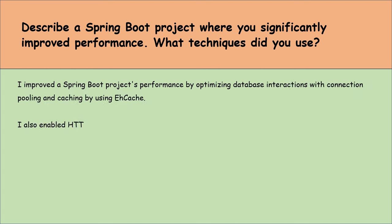If you had to scale a Spring Boot application to handle high traffic, what strategies would you use? We can add more app instances through horizontal scaling and use a load balancer to spread out the traffic. Break up our application into microservices so each part can be scaled independently. Use cloud services that can automatically adjust resources based on the app's needs. Use caching to store frequently accessed data, reducing the need to fetch it from the database every time. And implement an API gateway to handle requests and take care of things like authentication.